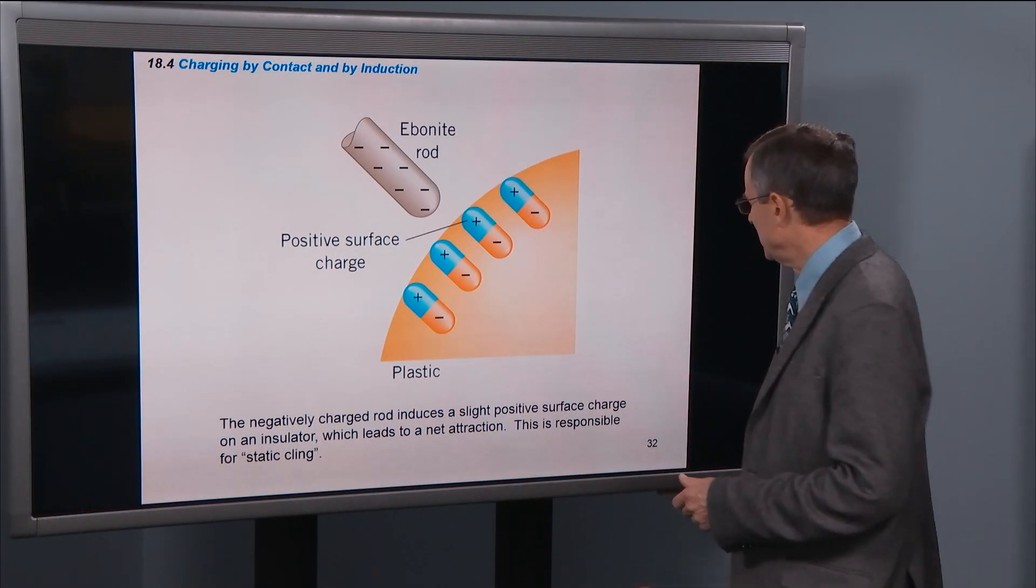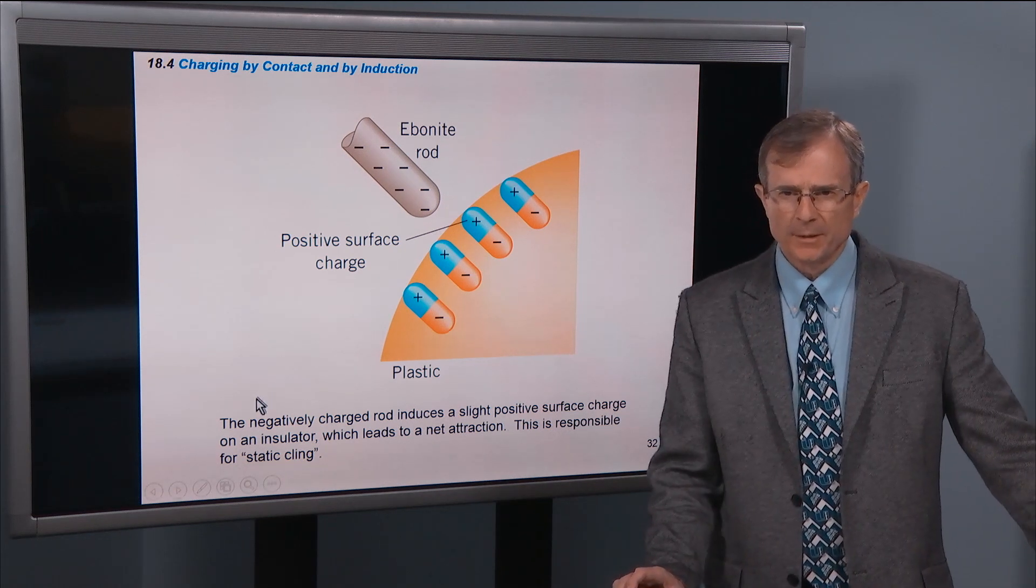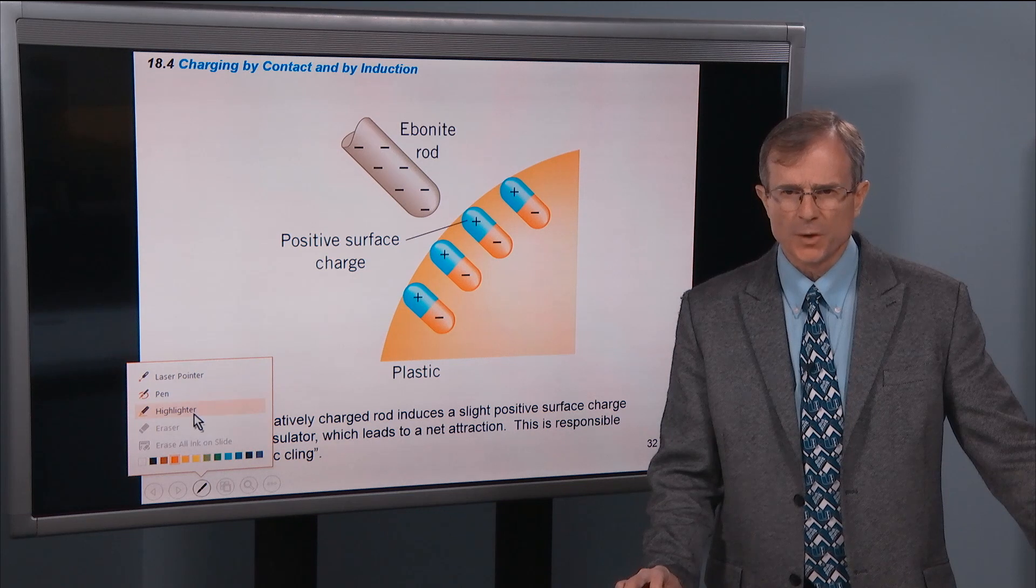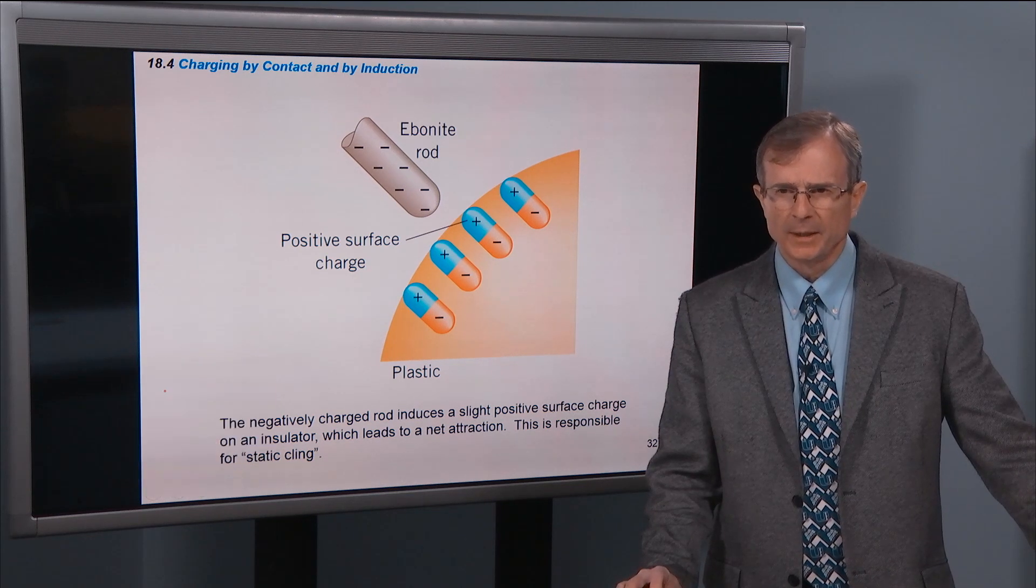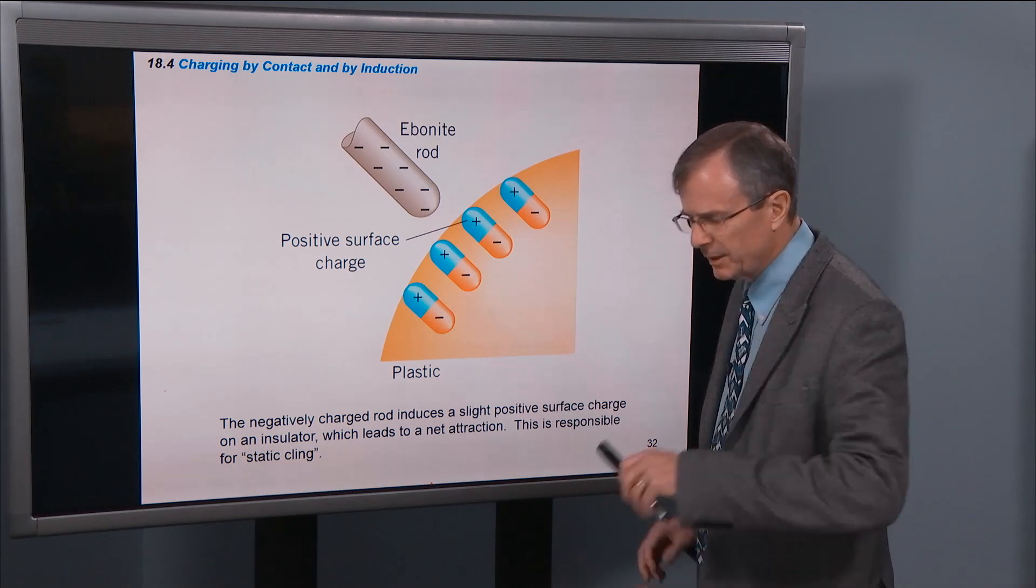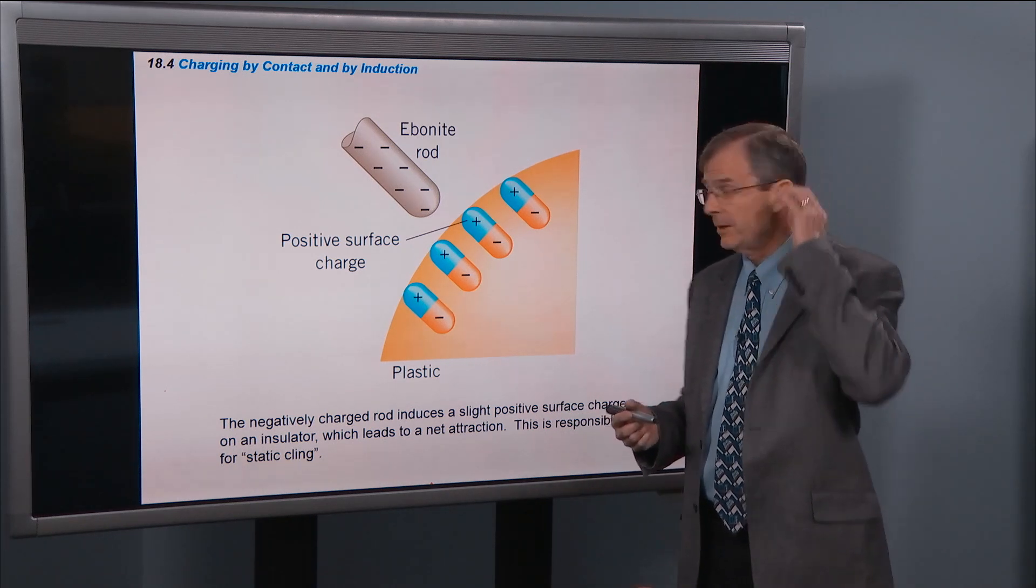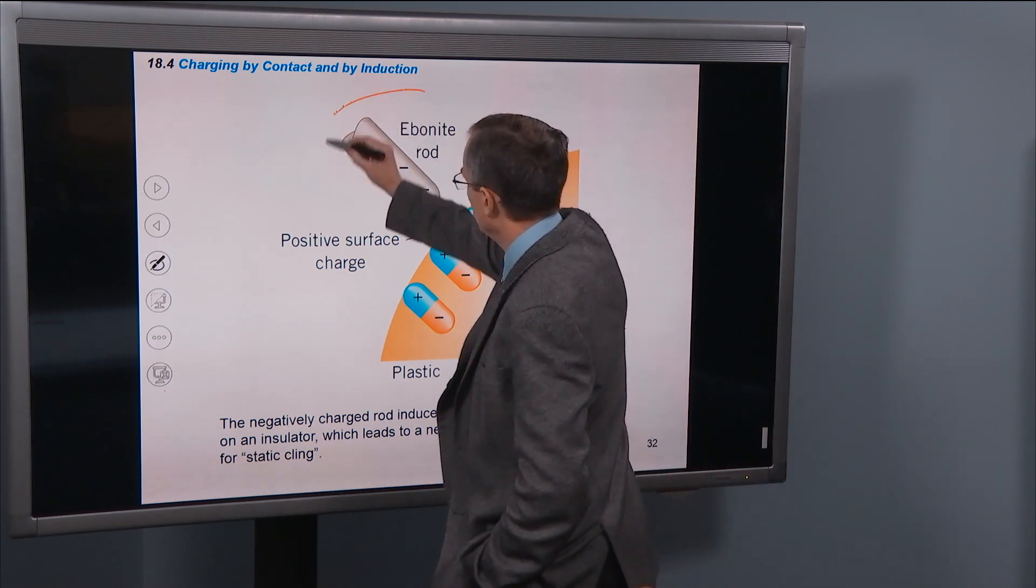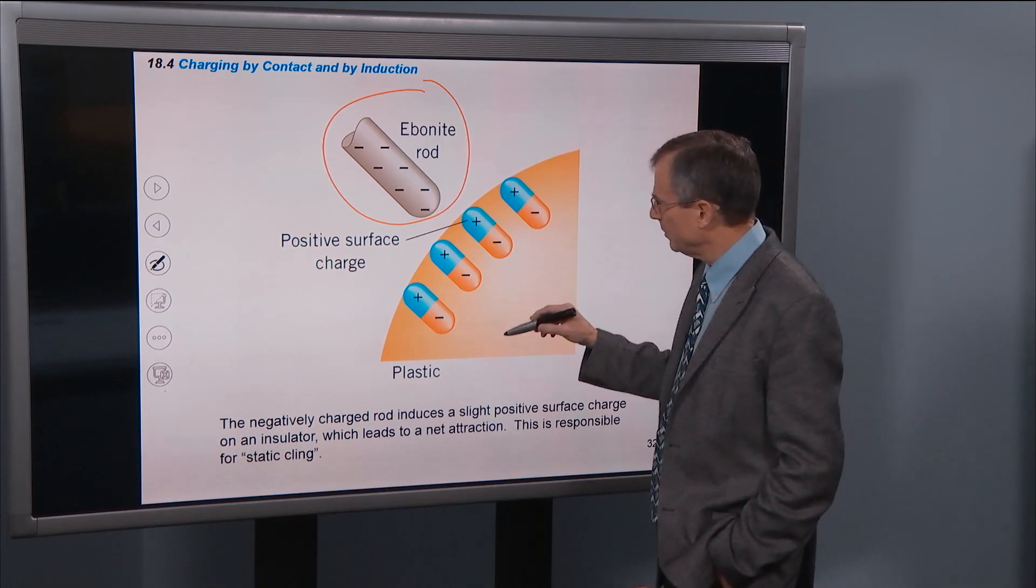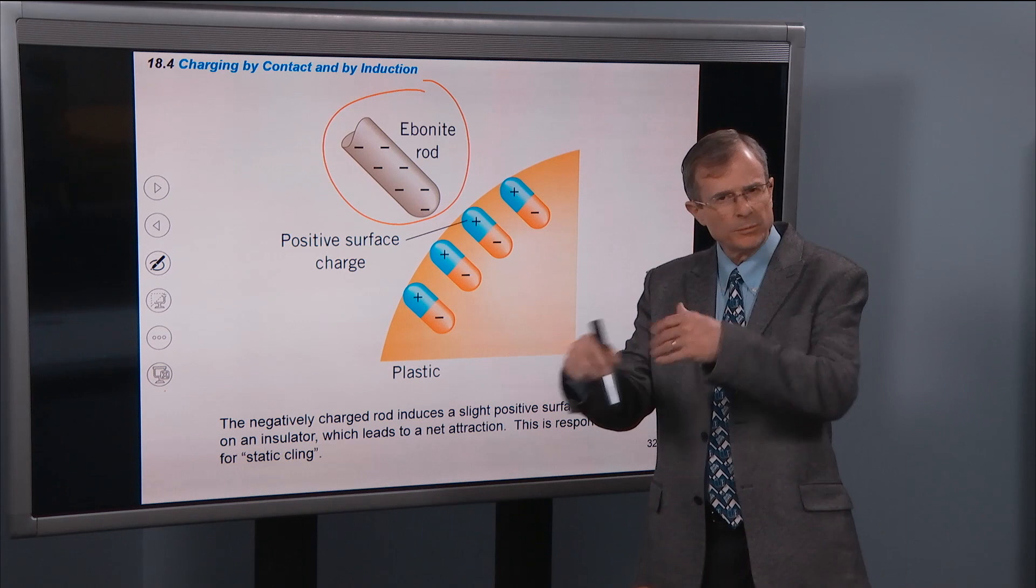Static cling that you see in your clothes that come out of the dryer, anything when it's a dry day, you can get static cling. The way that works is if you don't have a conductor, but you say you have a shirt, which is an insulator, anything with a charged object close to an insulator.